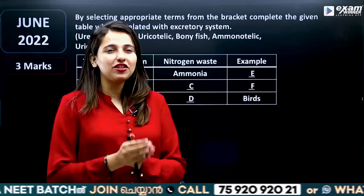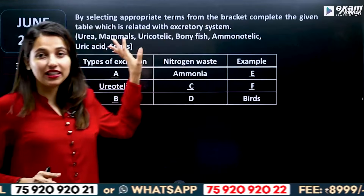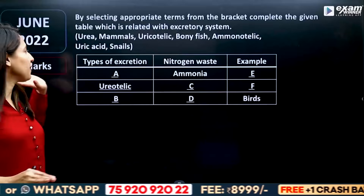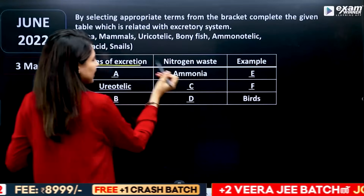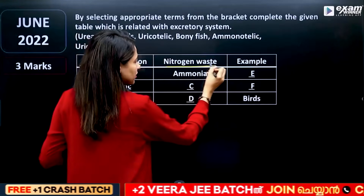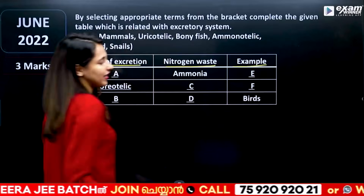In the excretion chapter, one important topic is the types of excretion. The type of excretion involves nitrogenous waste, and this is an example.